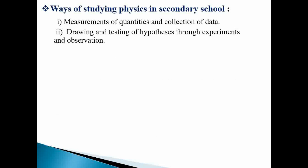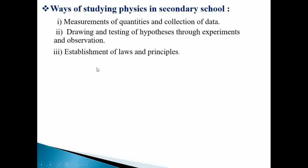The second way physics is studied is by drawing and testing of hypotheses. This is done through experiments carried out in the laboratory, where observations are made. The last aspect is the establishment of laws and principles. When experimental values consistently obey a certain relationship, we can establish a law and also come up with principles based on the experiment performed.